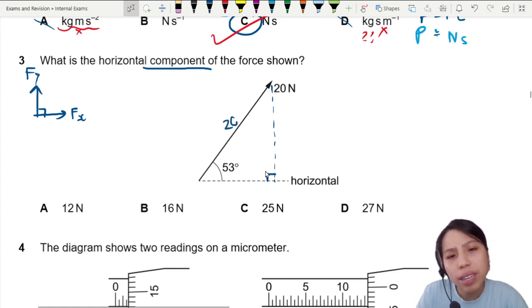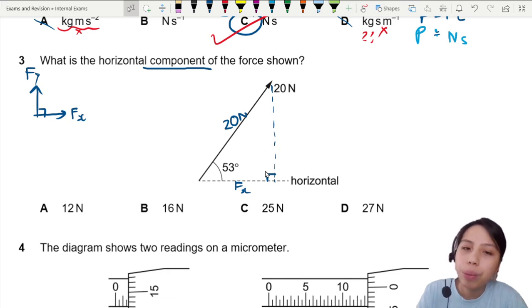So 20 Newton is the hypotenuse. We want to find this Fx, horizontal. So that will be adjacent hypotenuse.